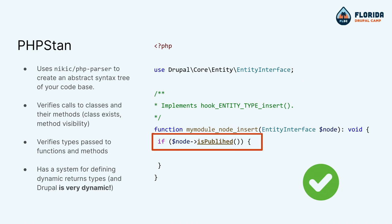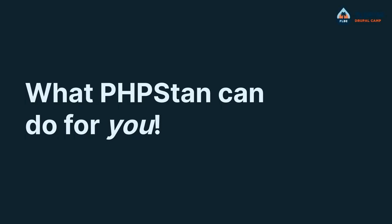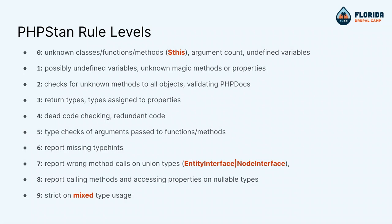PHPStan also has a system for defining return types, and Drupal has a lot of dynamic return types. So if you have entity storage, are you getting a Node? Are you getting block content? Technically in the type system, it's a generic interface. What can PHPStan do for you besides finding typos to unknown methods?